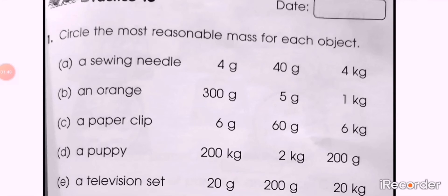Part C: a paper clip, again a little thing. The options are 6 grams, 60 grams, and 6 kg. First select the unit, grams or kilograms. Then if it is in grams, circle one of them from 6 grams or 60 grams.